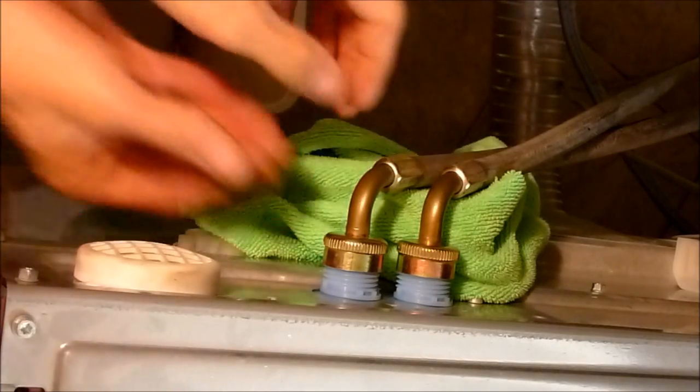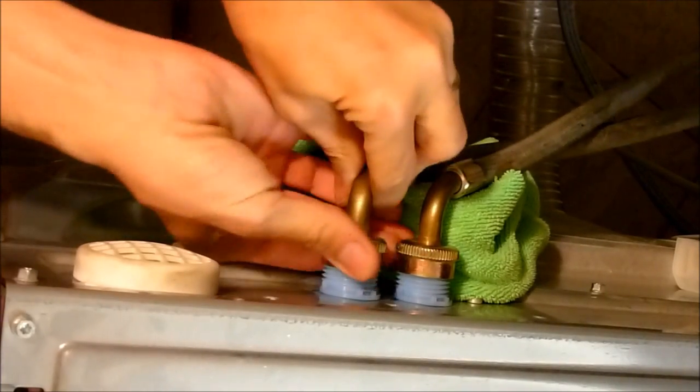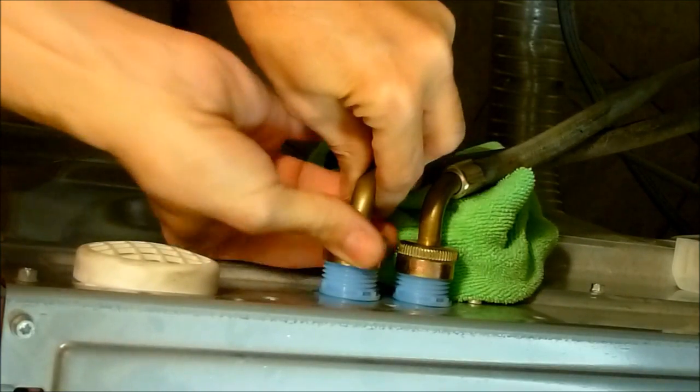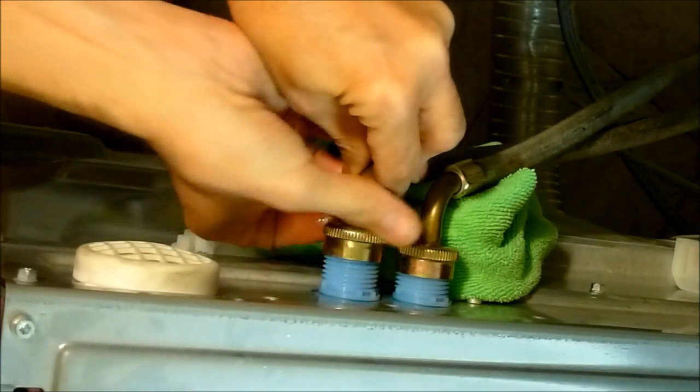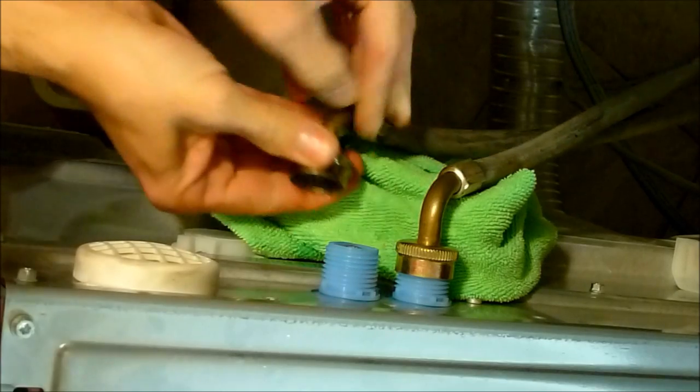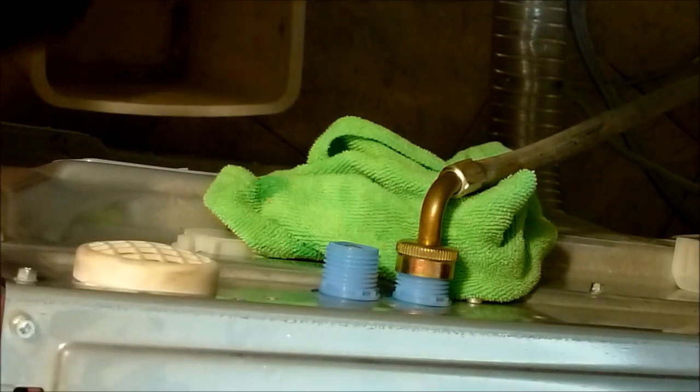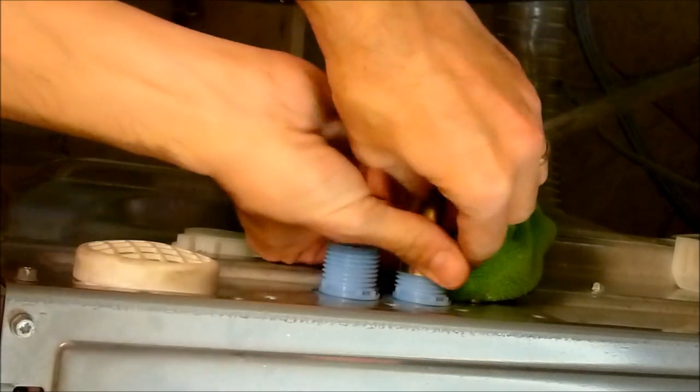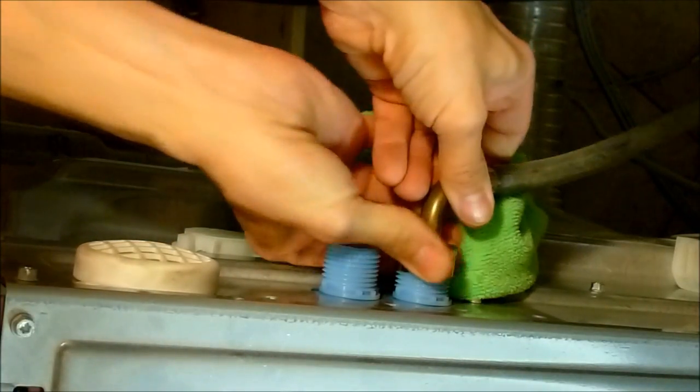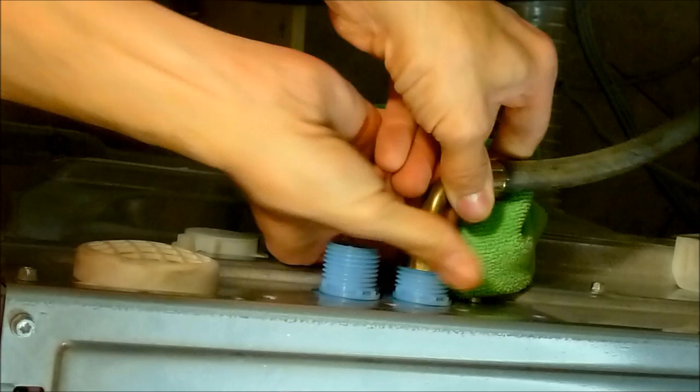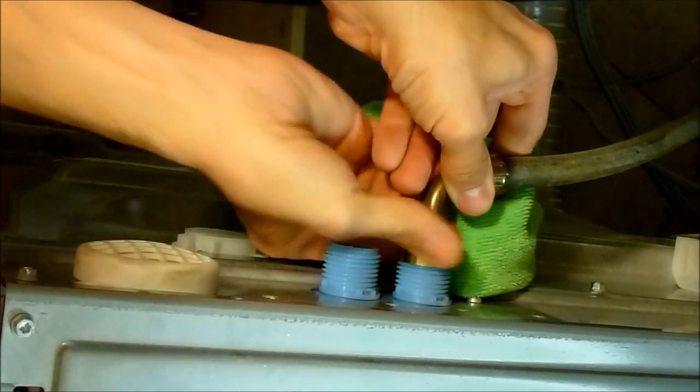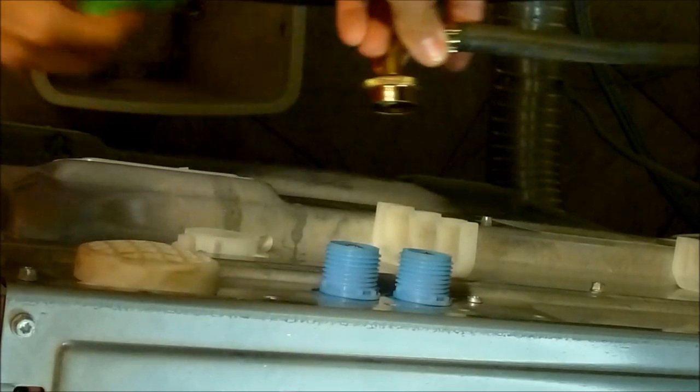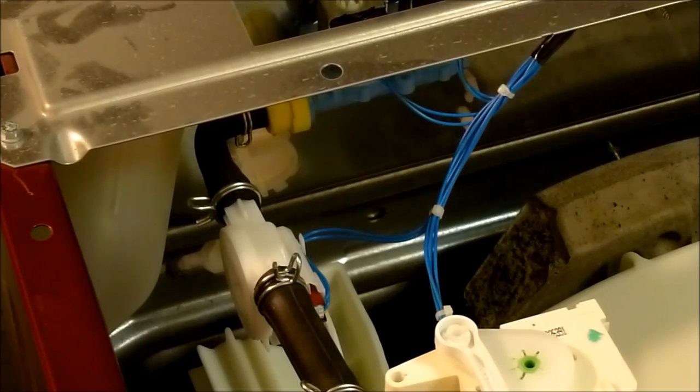Okay, so make sure your water supply is turned off and go ahead and just release. I've got a rag under here to catch any drips. Go ahead and loosen both the hot and cold supplies. It's a good idea to have a trash can handy or some kind of receptacle because the hoses are going to want to leak a little bit.